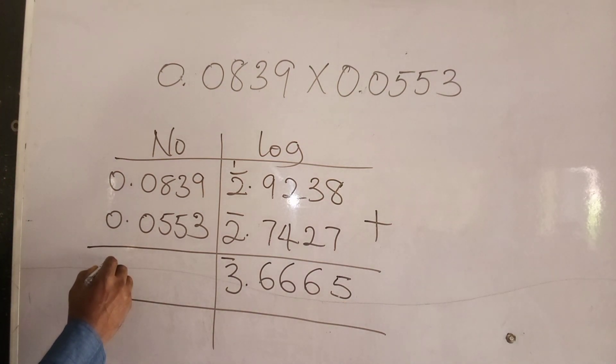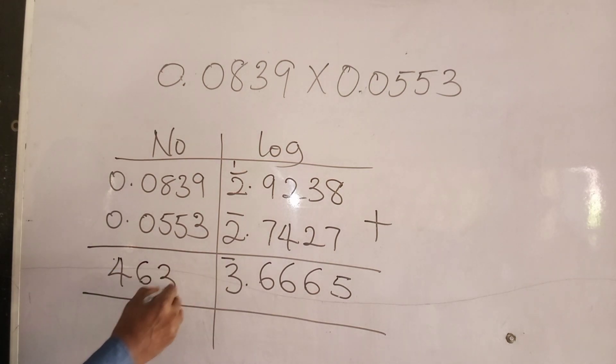66 under 6, so it is just 4639. 4639. 4639.